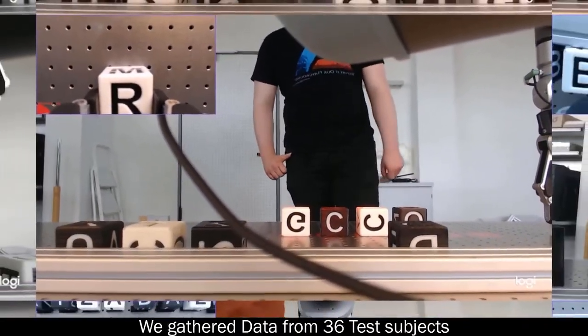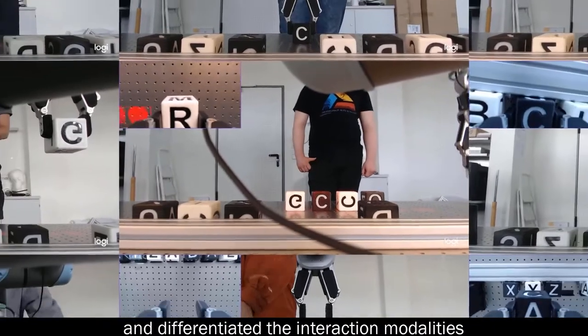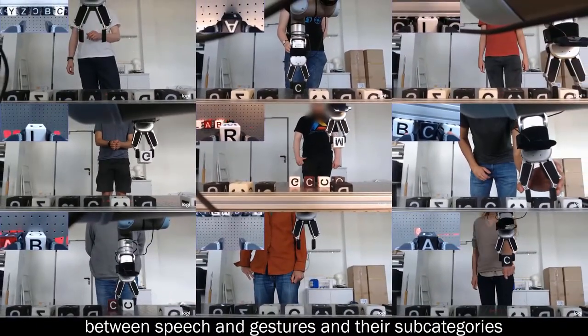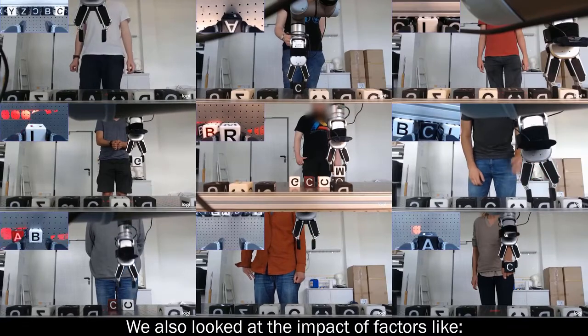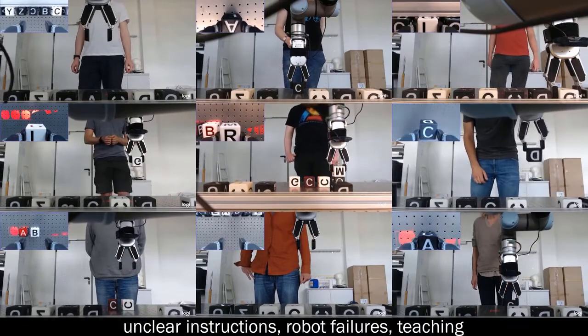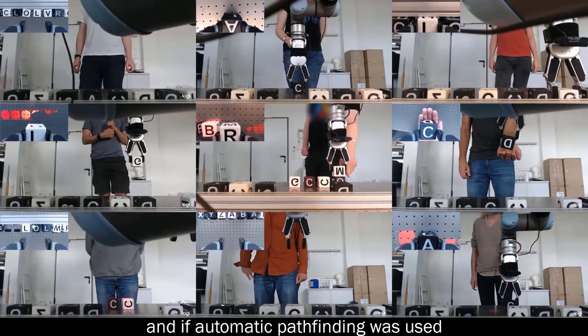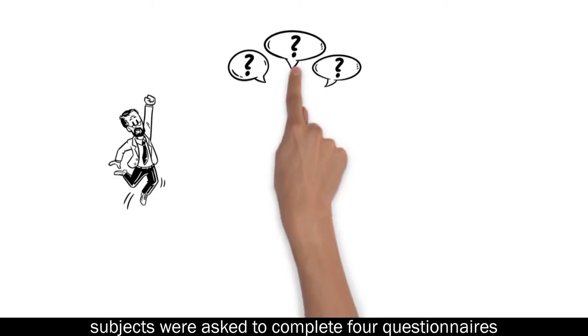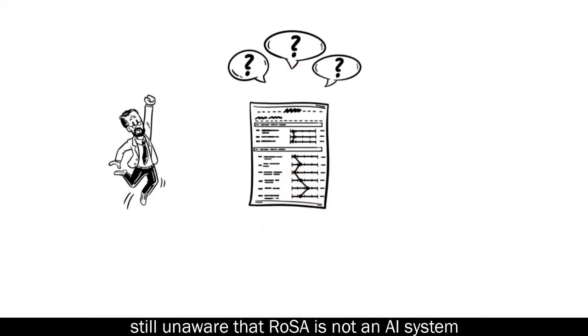We gathered data from 36 test subjects and differentiated the interaction modalities between speech and gestures and their subcategories. We also looked at the impact of factors like unclear instructions, robot failures, teaching, and if automatic pathfinding was used. To evaluate the user experience, subjects were asked to complete four questionnaires, still unaware that ROSA is not an AI system.